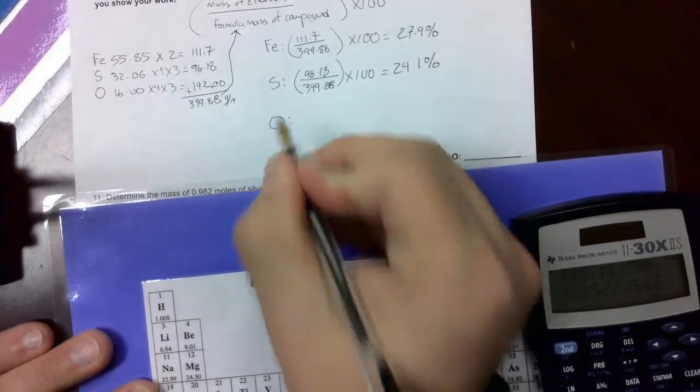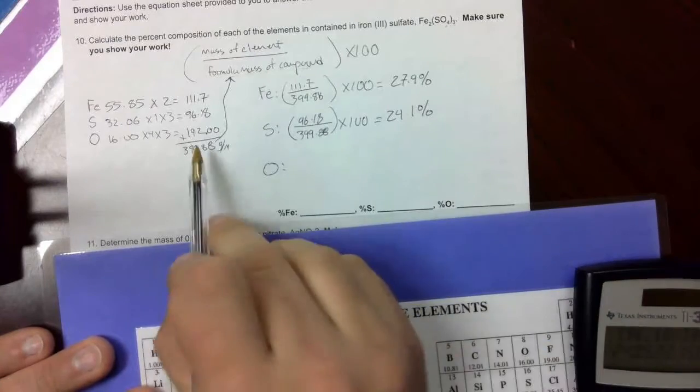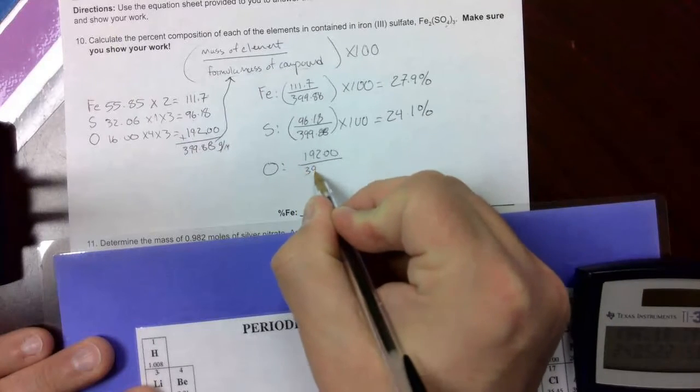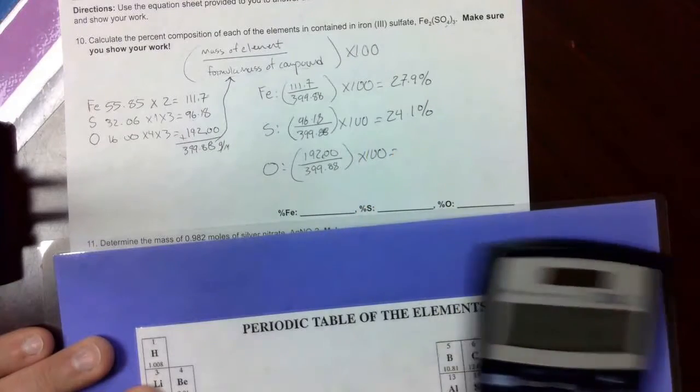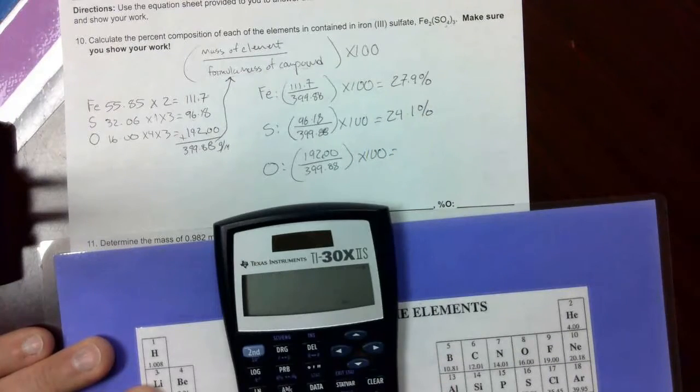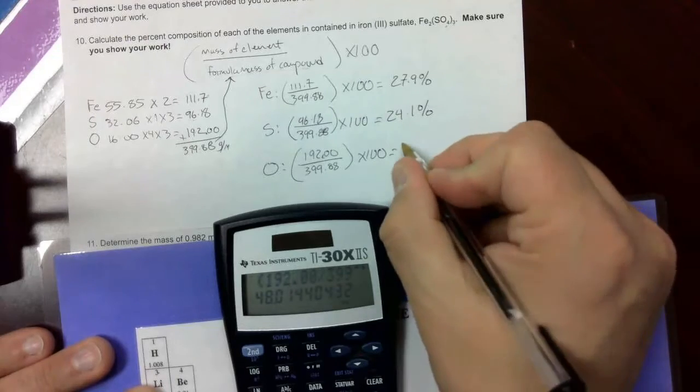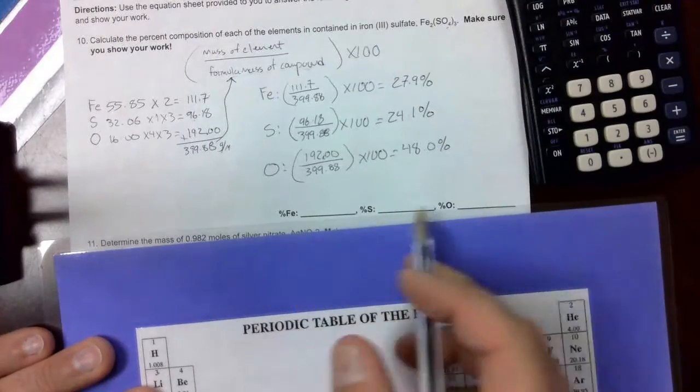The last element that we need to do percent composition for is oxygen. And so we take the mass that is oxygen, 192, divided by the total mass, 399.88, times 100. Again, with the calculator. Oops, forgot the parentheses. Divided by 100, and we get 48.0%.